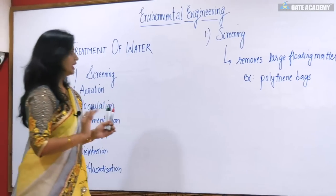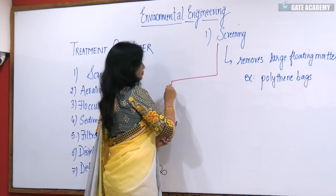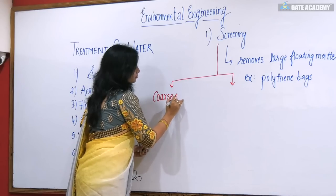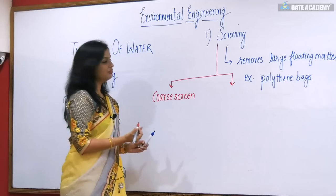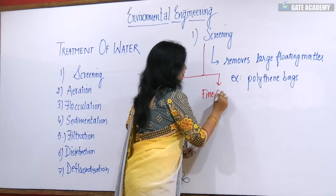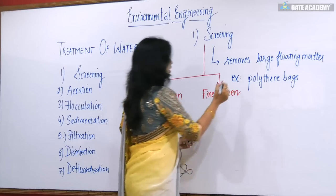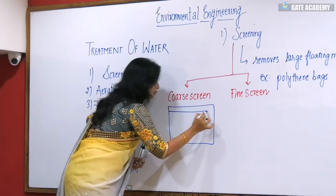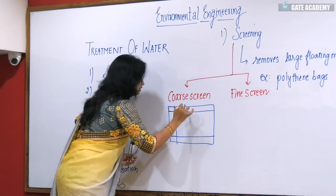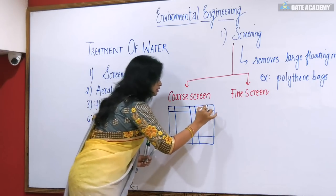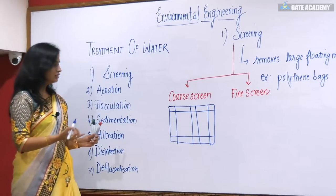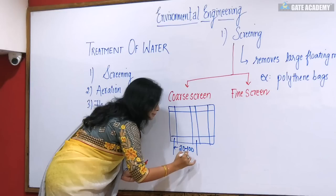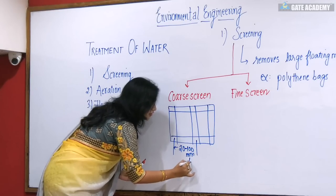Screening is basically of two types. One is the coarse screen and the other one is the fine screen. The difference between the two is that the coarse screen has a distance between the bars of 20 to 100 mm center to center.